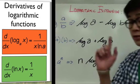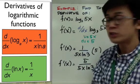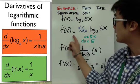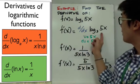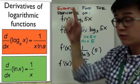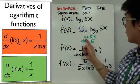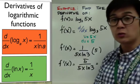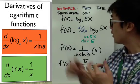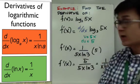Now let's apply the derivative of a logarithmic function with our first example. We want to find the derivative of log base 3 of 5x. So f prime of x equals the derivative of log base 3 of 5x with respect to x. We'll use the formula for logarithm, where u is 5x and du is 5.